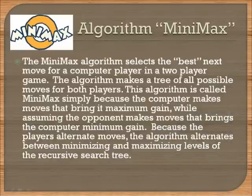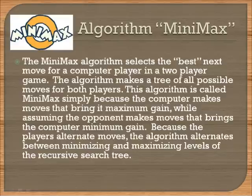The Minimax algorithm selects the best next move for a computer player in a two-player game. The algorithm maps a tree of all possible moves for both players. It is called Minimax simply because the computer makes moves that bring it maximum gain, while assuming the opponent makes moves that bring the computer minimum gain. Because the players alternate moves, the algorithm alternates between minimizing and maximizing levels of the recursive search tree.